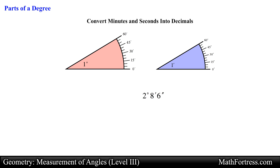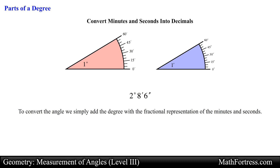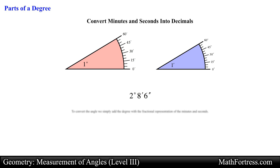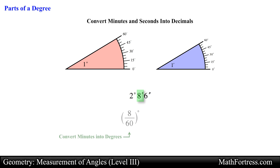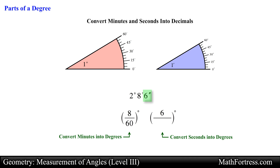At times you might want to convert an angle measure written in minutes and seconds into a degree measure with a decimal. To convert, we simply add the degree with a fractional representation of the minutes and seconds. For example, to convert 2 degrees 8 minutes 6 seconds back to decimal degrees, we first convert 8 minutes into an equivalent degree measure by dividing by 60, since 1 degree equals 60 minutes. We also need to convert the seconds into an equivalent degree measurement.